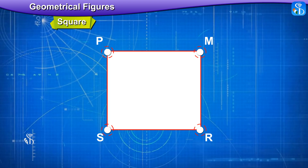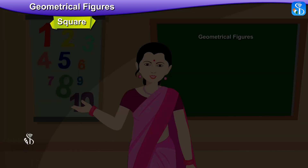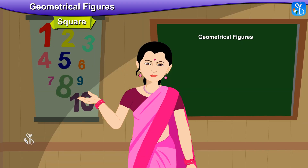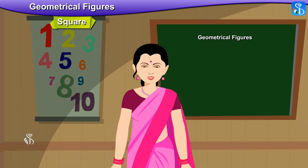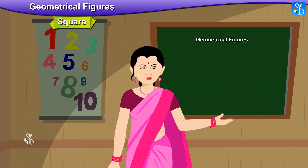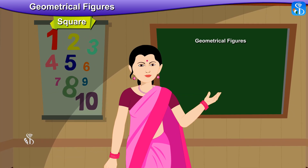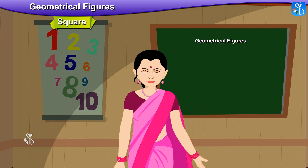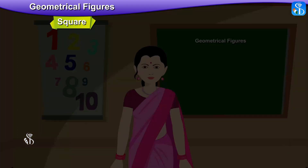So, points P, S, R, and M are the vertices of the square.